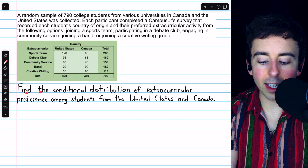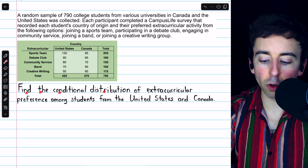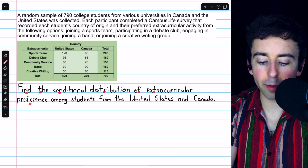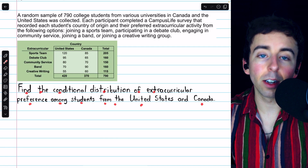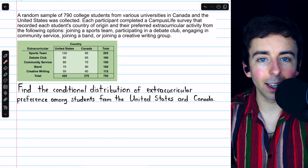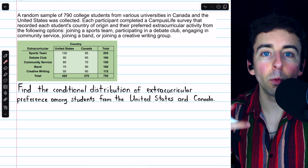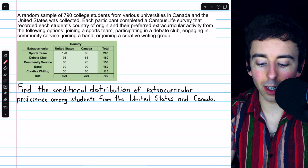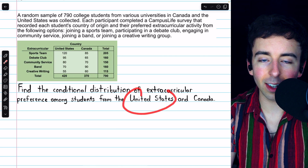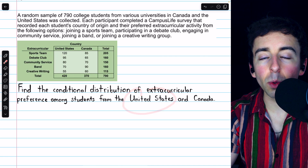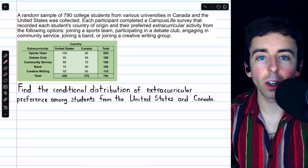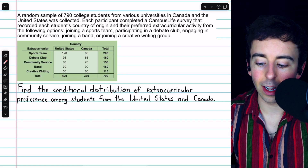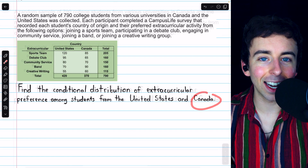We are asked to find the conditional distribution of extracurricular preference among students from the United States and from Canada. Thus, the condition would be that a student is from the United States, and then we'd have another conditional distribution for the condition that a student is from Canada.